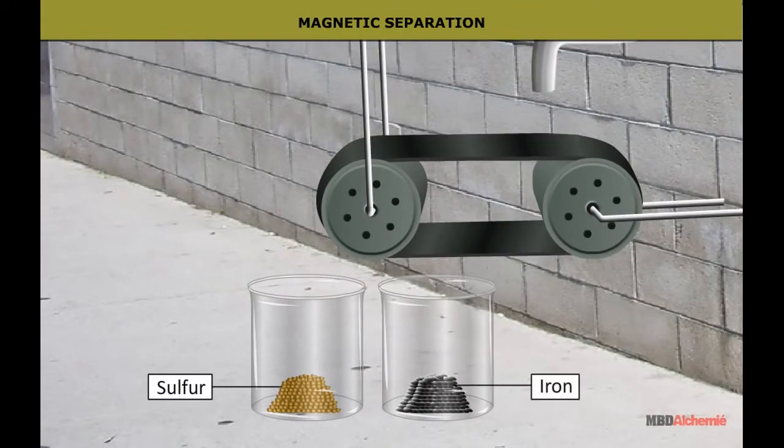the magnetically inactive sulphur particles fall down from the roller and get collected in a beaker, while the magnetically attracted iron particles fall later and get collected in another beaker.